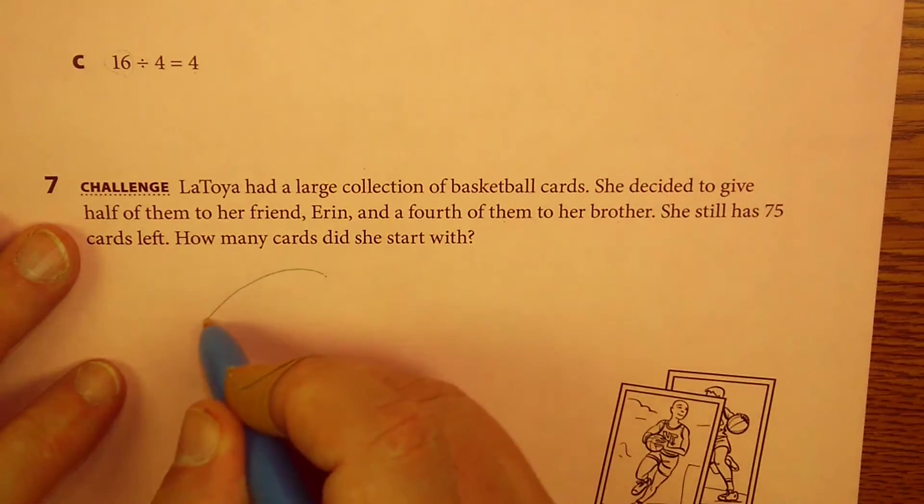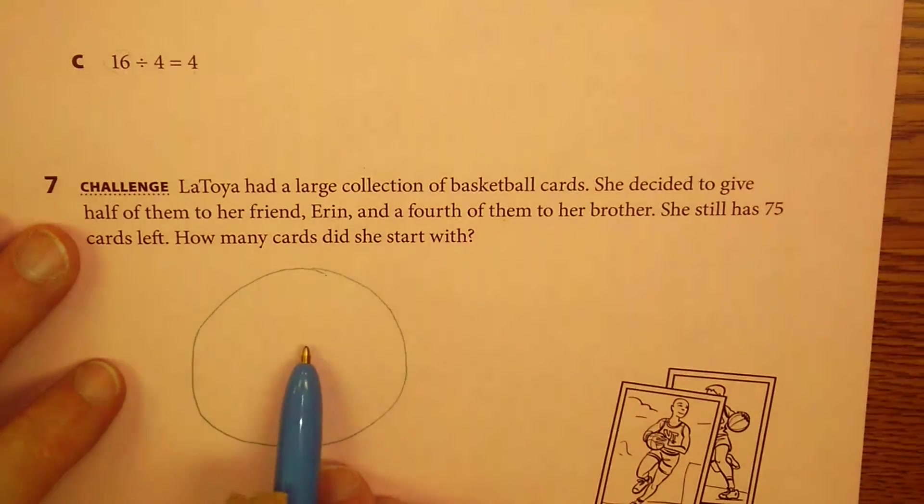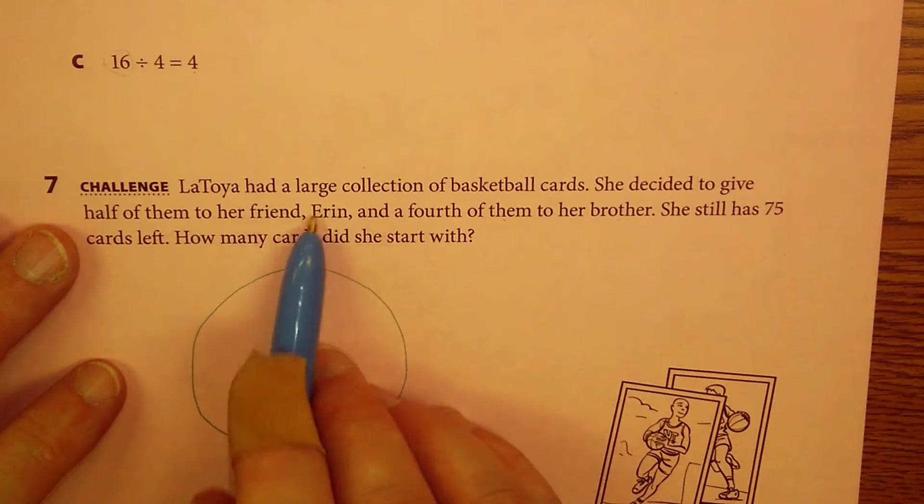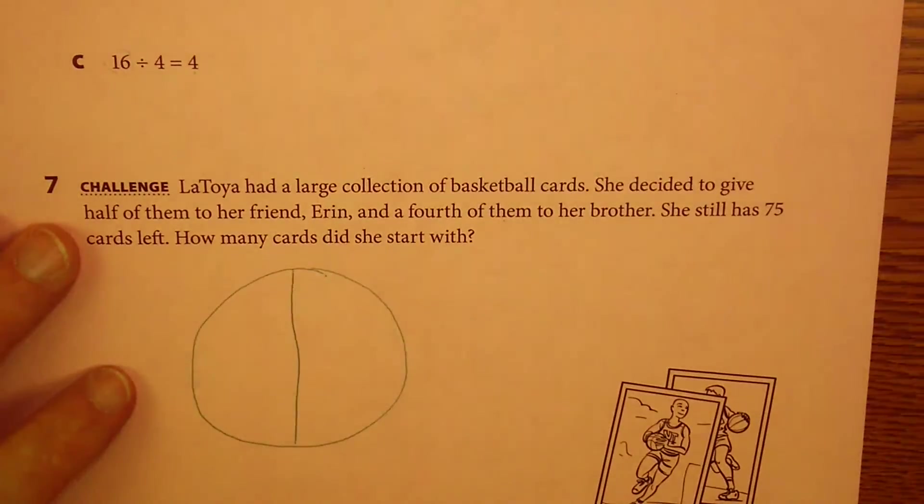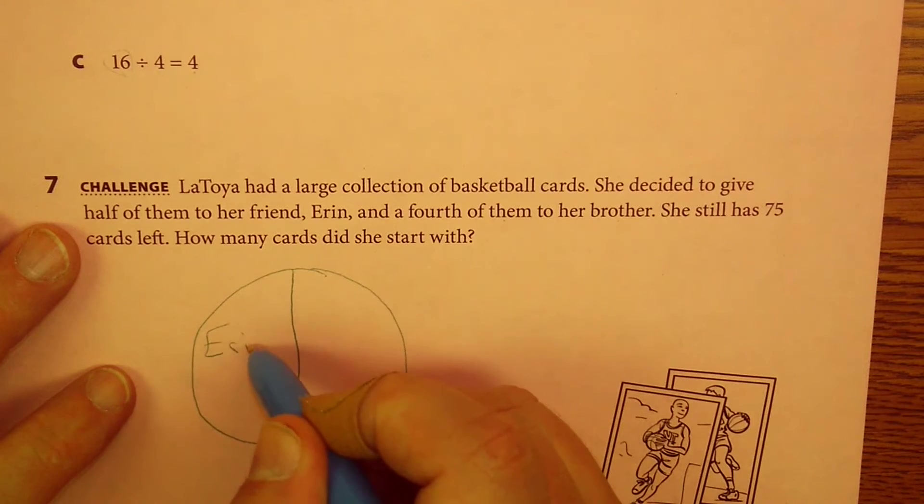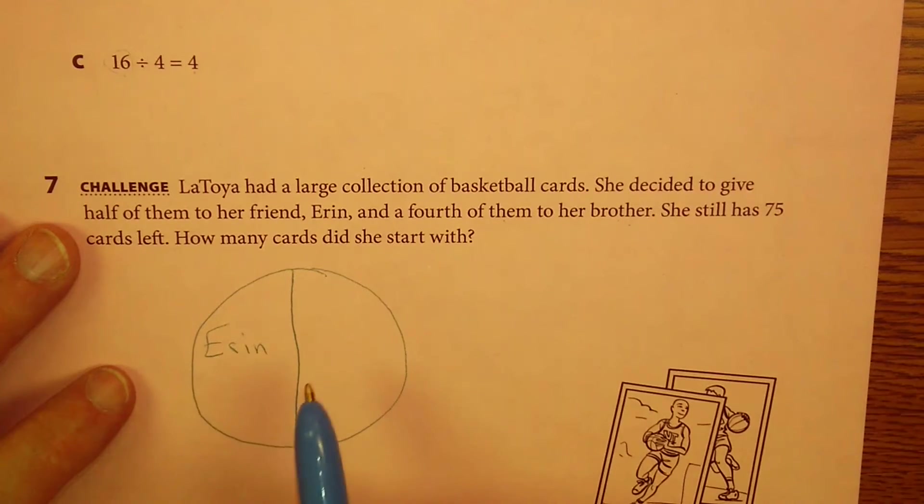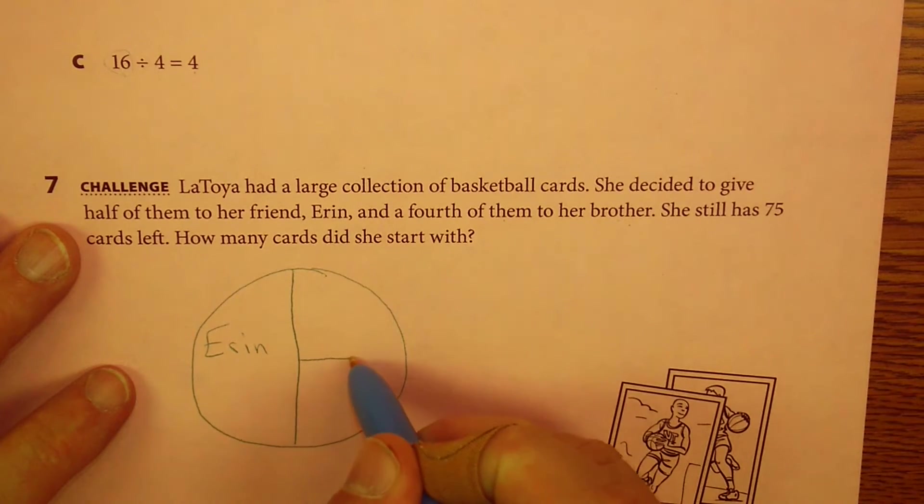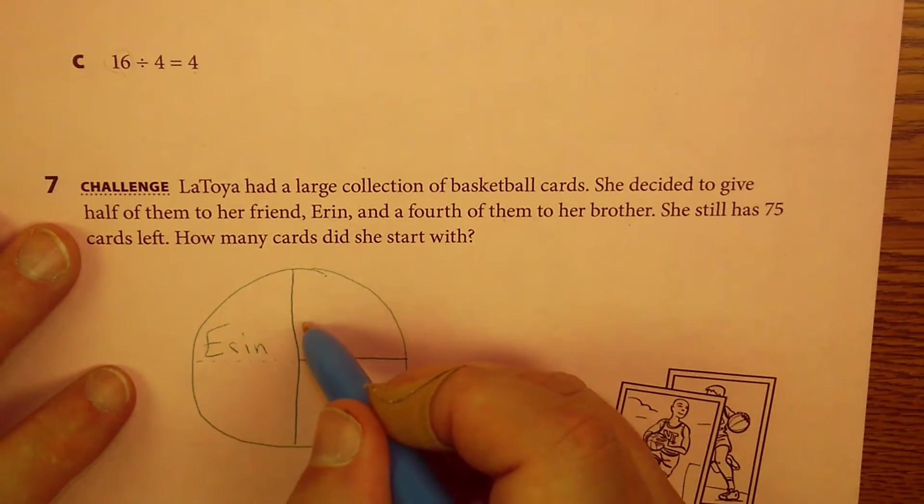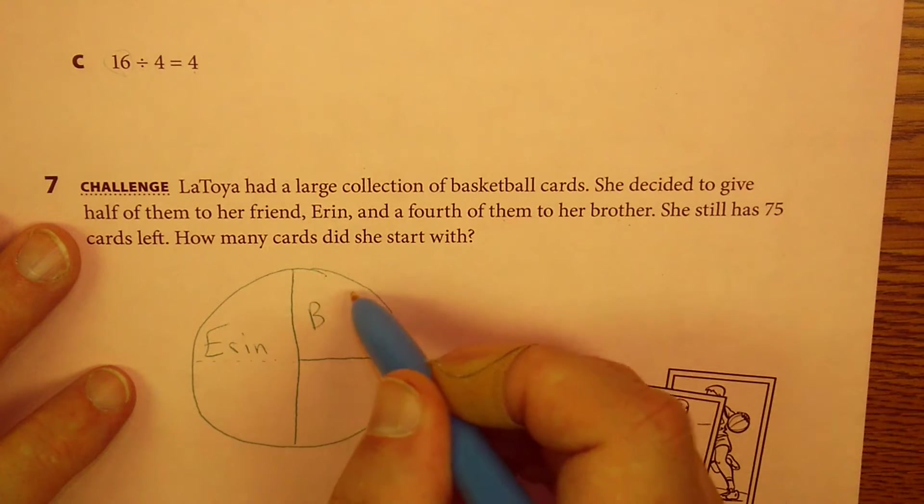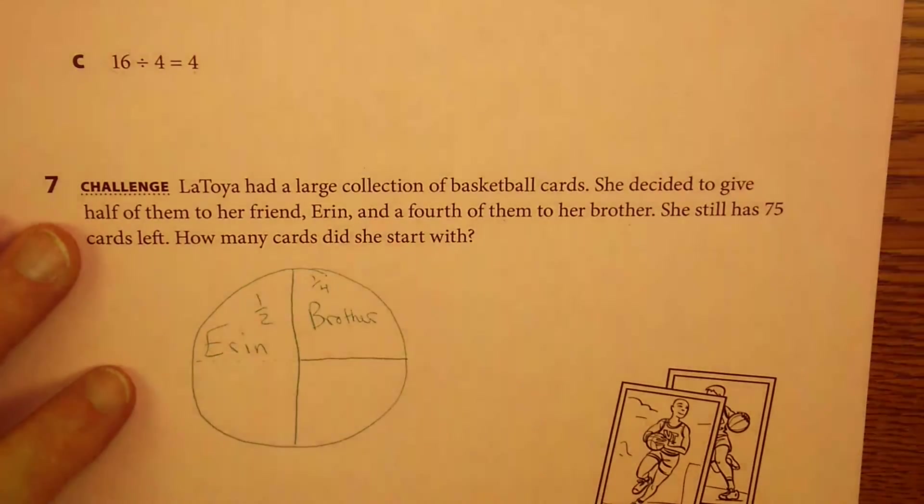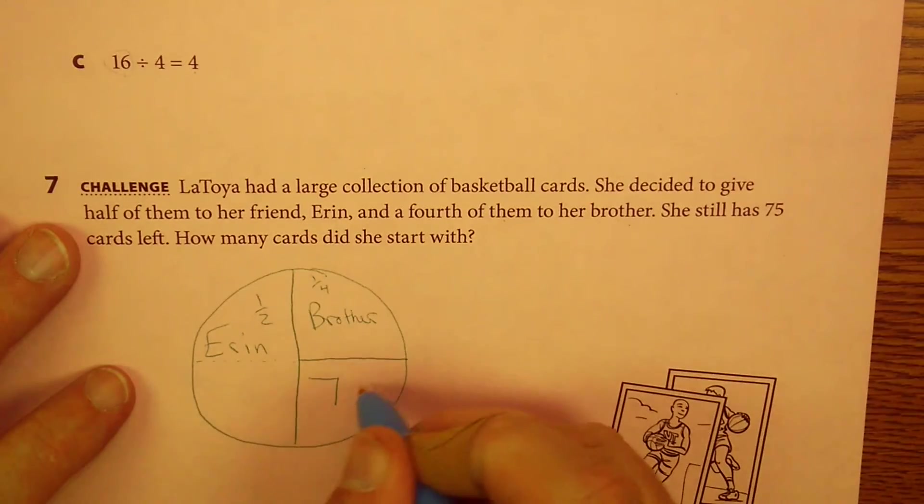So, let's draw a circle. These are all of Latoya's cards. She decided to give half of them to her friend Aaron. So, cut all of her cards in half, and we're going to give half of them to Aaron. And a fourth of them to her brother. So, I need to make a fourth. This would be kind of like an imaginary line here. We're going to give all of that to Aaron, but I'm going to give one-fourth to brother. And this is one-half. She still has 75 cards left.